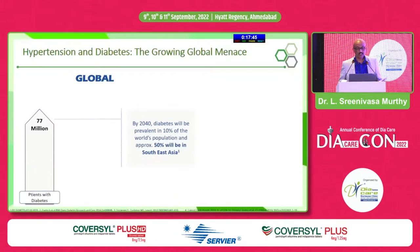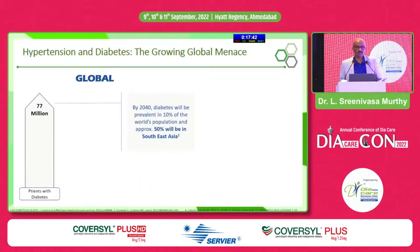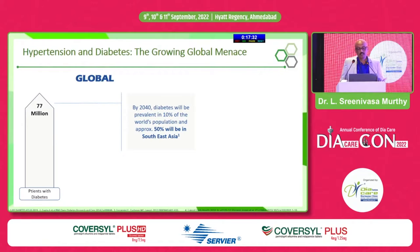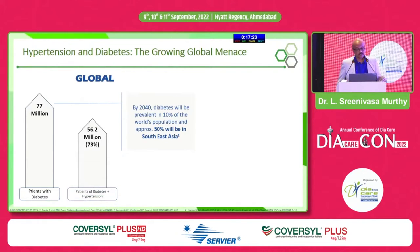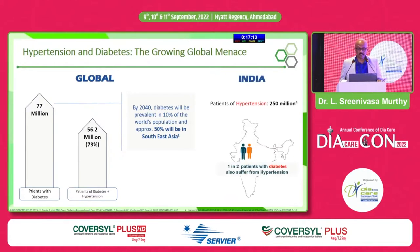All of us know the problem burden of hypertension and diabetes — it is a growing global menace. By 2040, these numbers will be prevalent in 10% of the world's population, and 50% of these will be in our Southeast Asian countries. For patients with both diabetes and hypertension together, the numbers are 73%.